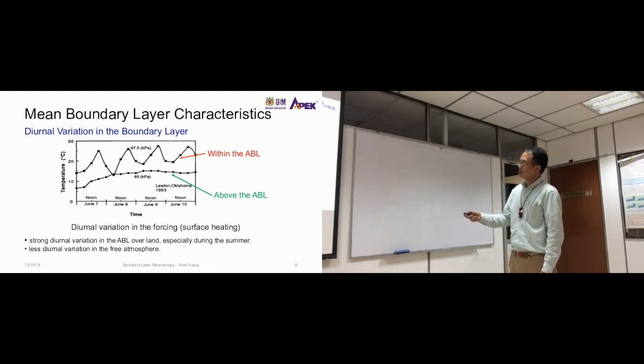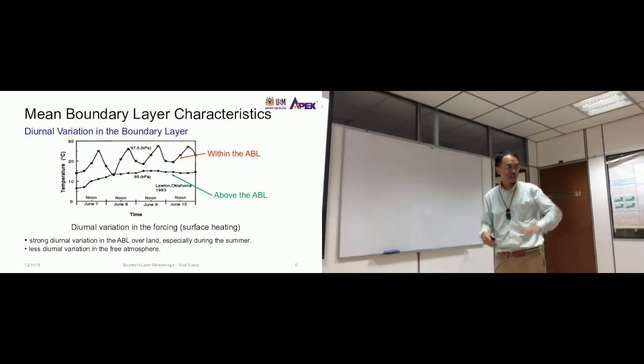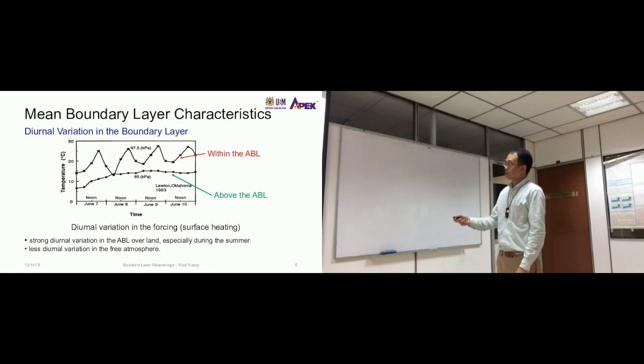Now, this variation is caused by the forcing of the surface. What causes this change is actually the surface. The closer it is to the surface, the higher the effect of the surface onto the atmospheric parameters. The further it is away, the less forcing of the surface. Be familiar with this term, forcing, because that's a common term to describe this situation.